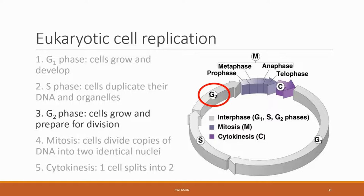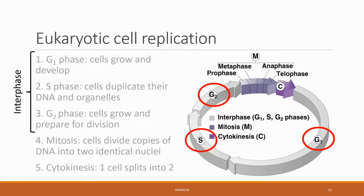This brings us to the G2 phase, where cells wrap up finishing tasks that are involved with growing. They've already replicated their DNA; now they just need to tidy up some tasks and finish growing so that they're capable of breaking and turning into two separate cells. This is the final interphase step, and interphase is made up of G1, S, and G2.